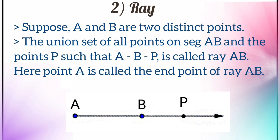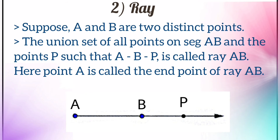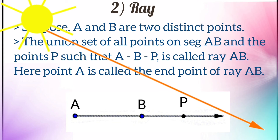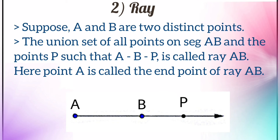Ray AB is the union of point A, point B, and all points beyond B — all going to infinity. It is written as ray AB. It has one endpoint and extends to infinity, meaning there are infinite points in a ray. Point A is the endpoint of ray AB. A ray always has a single endpoint. For example, sunlight — the sun has only one endpoint and extends to infinity, which is why it is called a sun ray, not a sun segment.